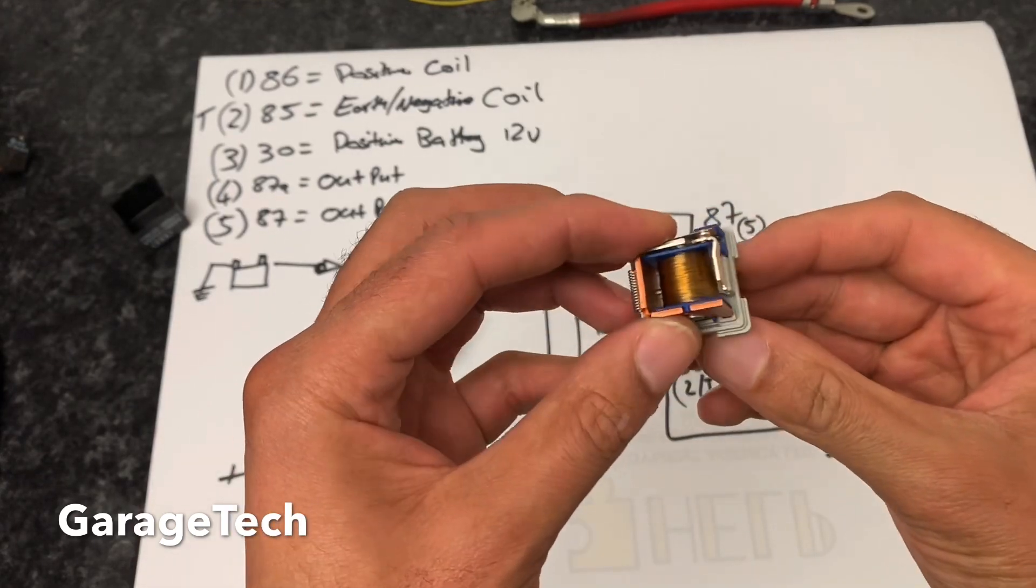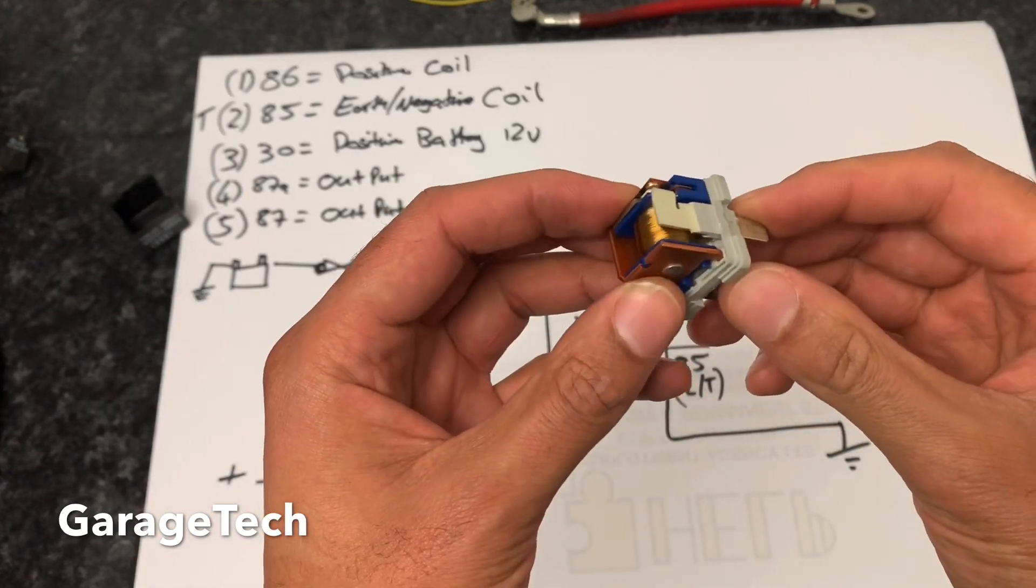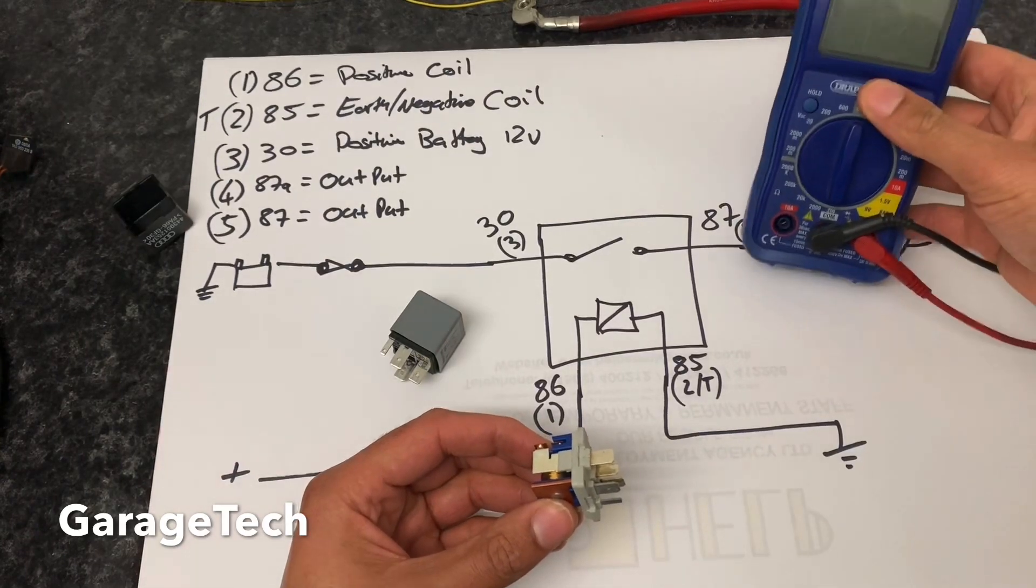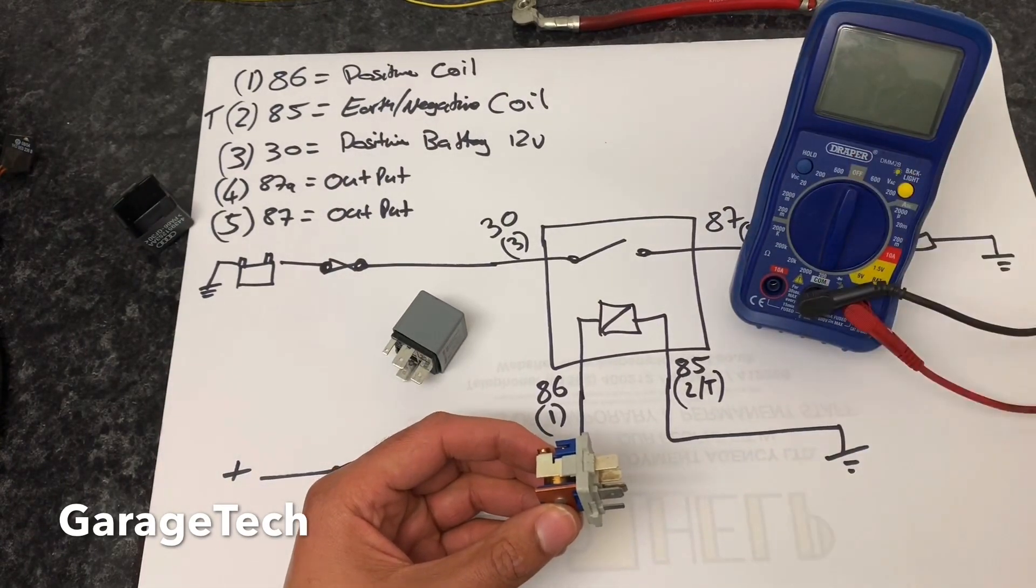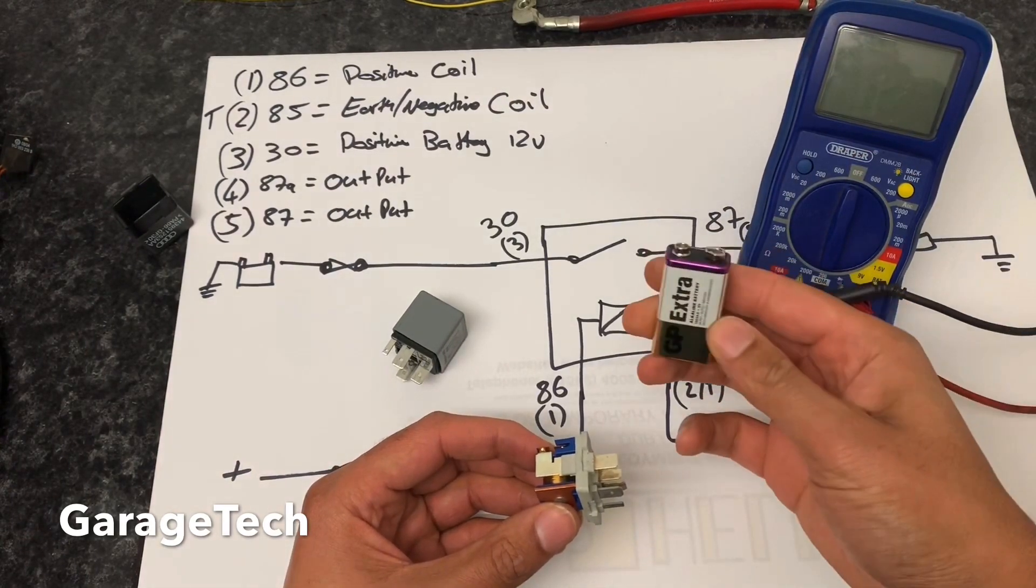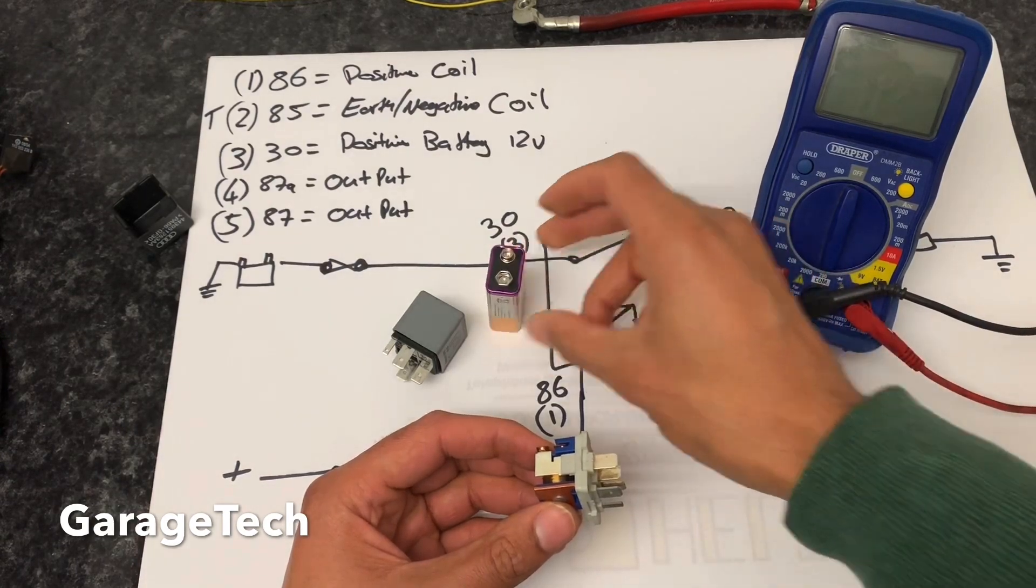In order to do that, you will need a multimeter, and in this example I also use a square battery, which is quite useful.